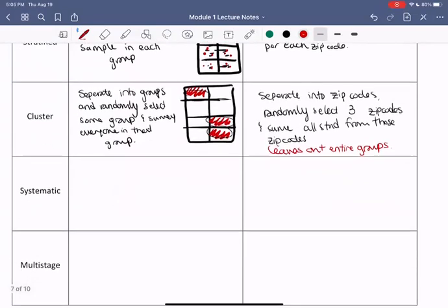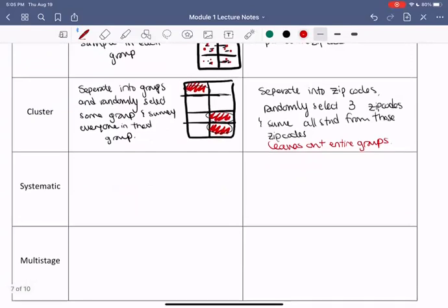So the next sampling method is called a systematic method. So in a systematic sampling method, you have a system by which you select individuals. So for example, you could survey every nth individual, where n is like, say, 10 or 100. Survey every nth individual.